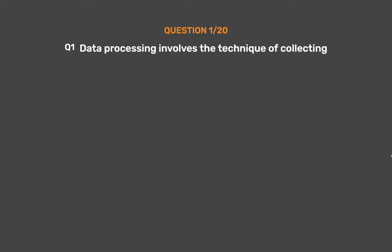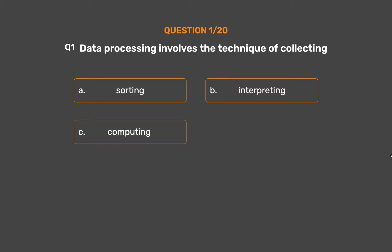Question number 1. Data processing involves the technique of collecting. Option A: Sorting. Option B: Interpreting. Option C: Computing. Option D: All of them. The correct answer is Option D: All of them.